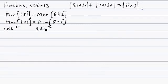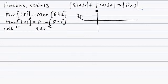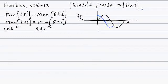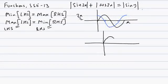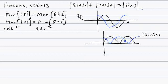Let's apply this to our equation with sin 2x. The function sin 2x has period 2π/2, that is period π. Similarly, cos 2x also has period π. When we take the mod of both graphs, we flip the lower half into the upper half. This gives us mod of sin 2x and mod of cos 2x.